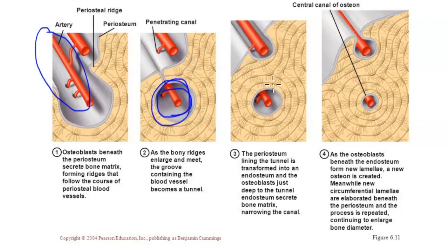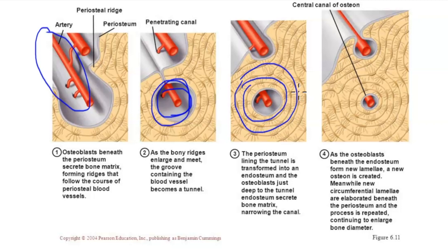The osteoblasts continue their work and form concentric lamellae around this artery, starting to form an osteon. The periosteum lining in the tunnel is transformed into an endosteum — periosteum is on the surface of the bone, while endosteum is on the inside, lining each of the Haversian canals and into the canaliculi. The osteoblasts attached to the tunnel endosteum secrete bone matrix, narrowing the canal.